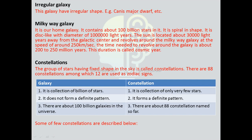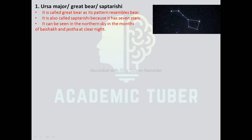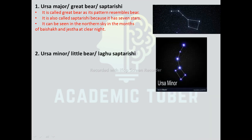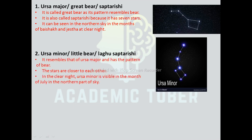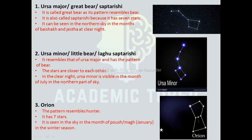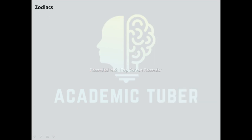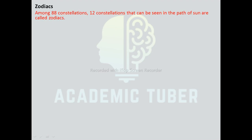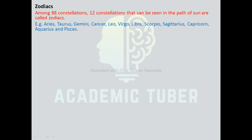Ursa Major: called the Great Bear, its pattern resembles a bear. It is also called Saptarishi because it has seven stars. It can be seen in the northern sky in the months of Baisakh and Jyestha on a clear night. Ursa Minor, or Little Bear: it resembles Ursa Major with the pattern of a bear. It is visible in the northern part of the sky in the month of July. Orion: its pattern resembles a hunter. It has seven stars and is seen in the eastern sky in the month of January in the winter season. Zodiac: among 88 constellations, 12 that can be seen in the path of the Sun are called zodiac signs — Aries, Taurus, Gemini, Cancer, Leo, Virgo, Libra, Scorpio, Sagittarius, Capricorn, Aquarius, and Pisces.